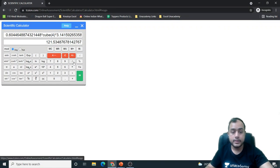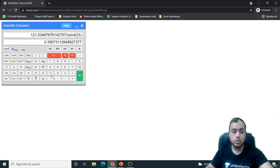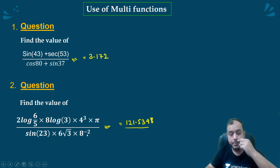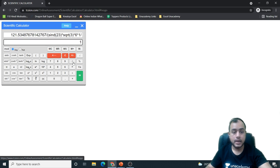Now, what I will do is, I will divide it. I will use a bracket now. Now, sin 23. Then sin 6 root 3 into 3 root into 6. Then 8 cap minus 2. 8 cap minus 2 is basically into 1 by 8 cap 2.